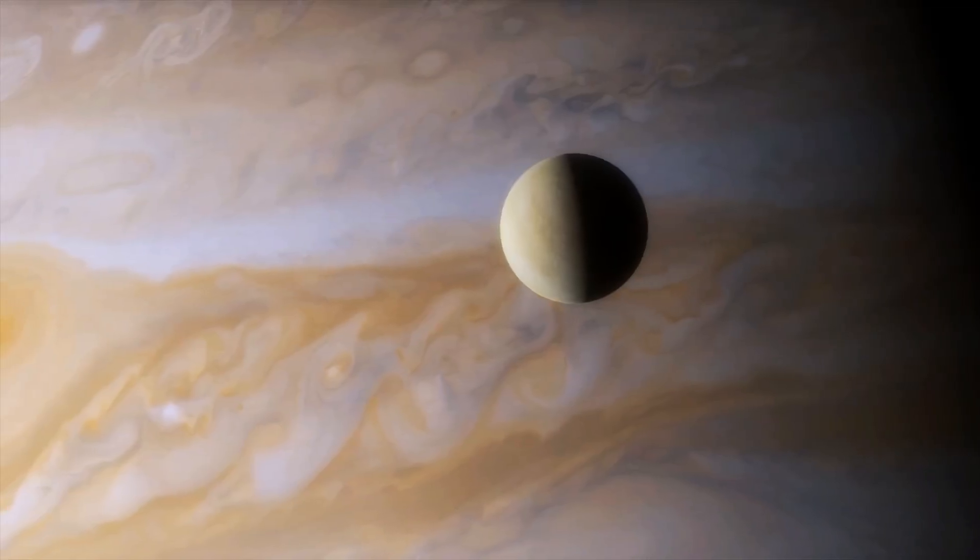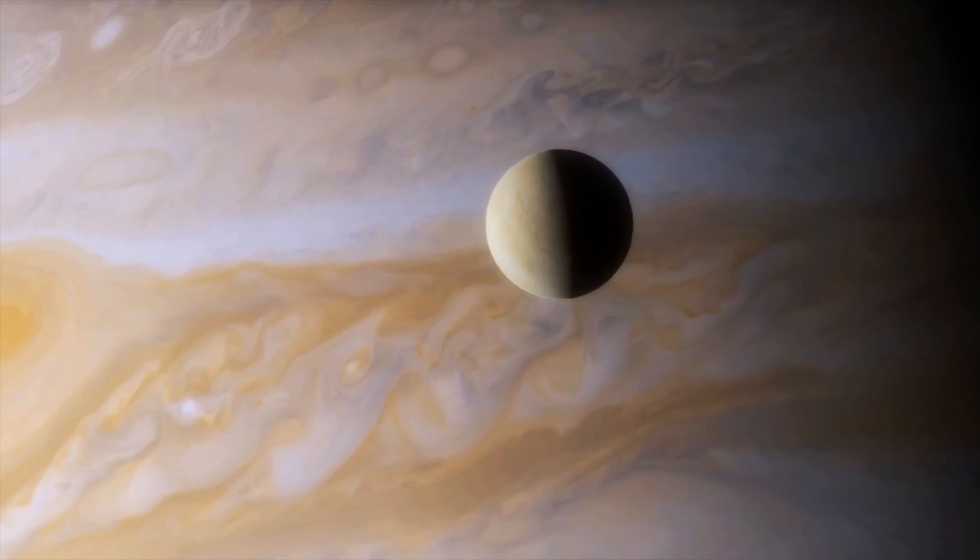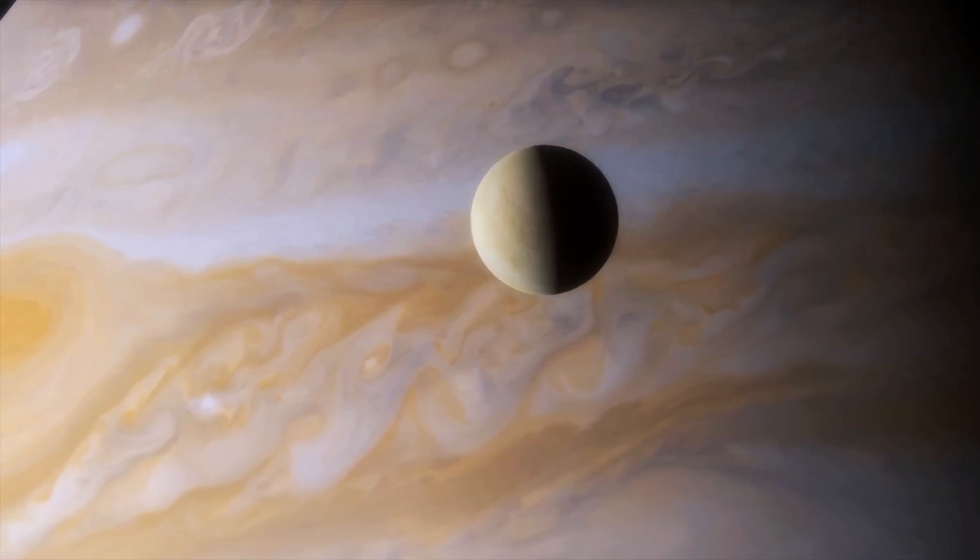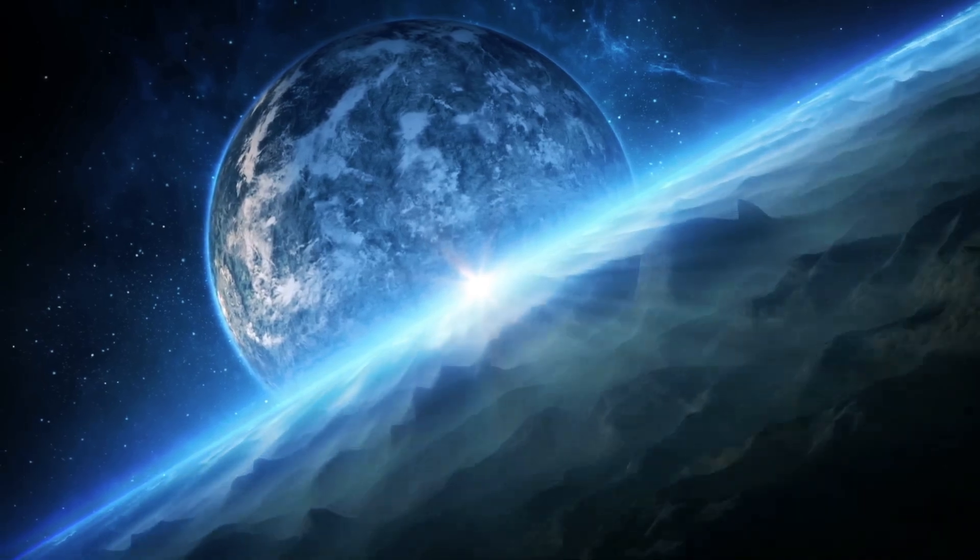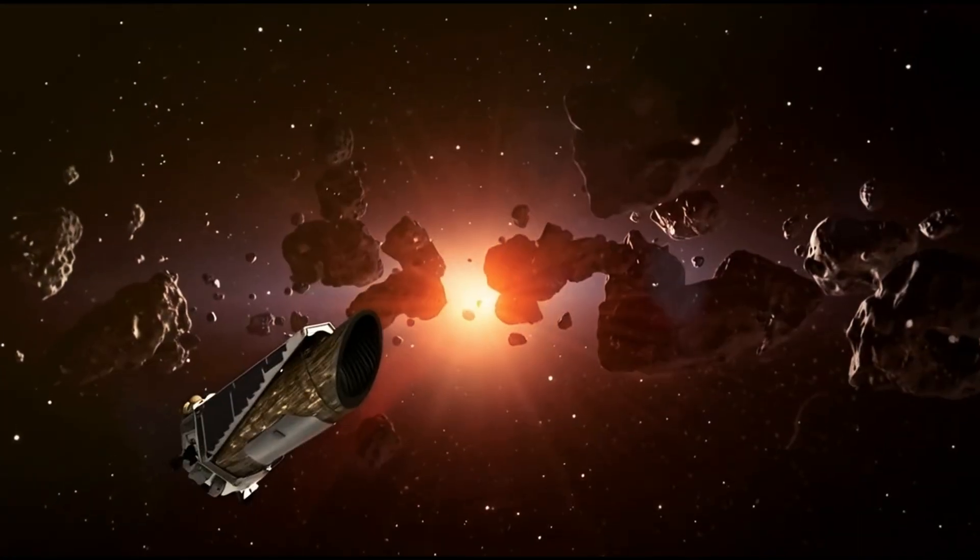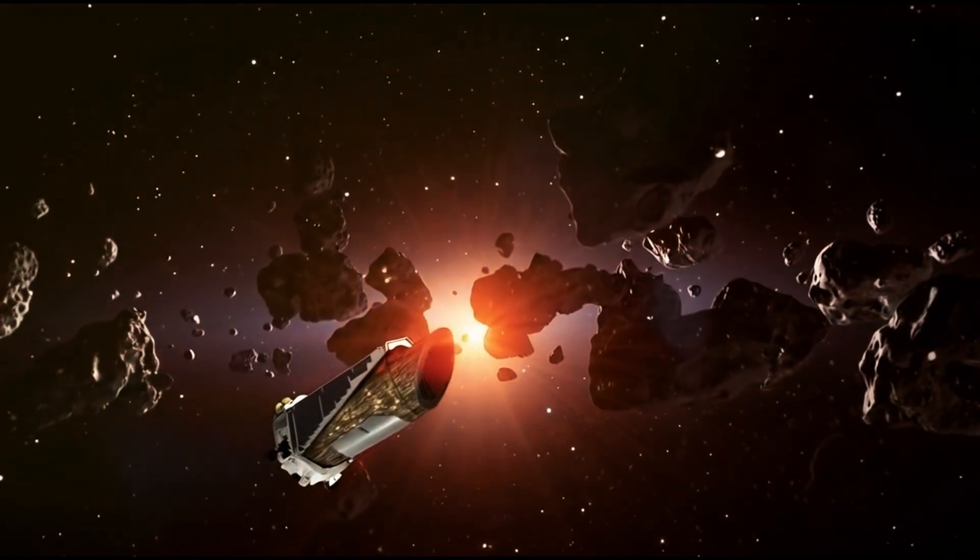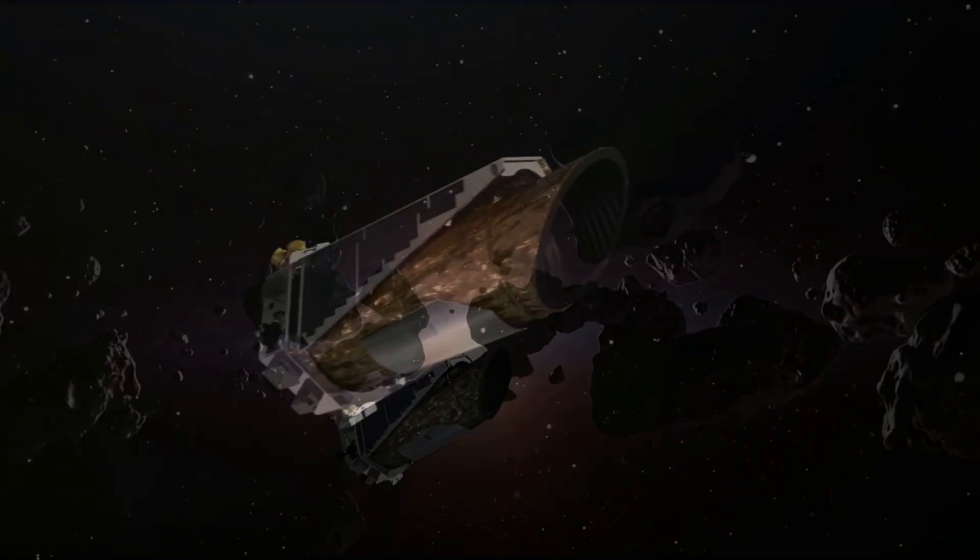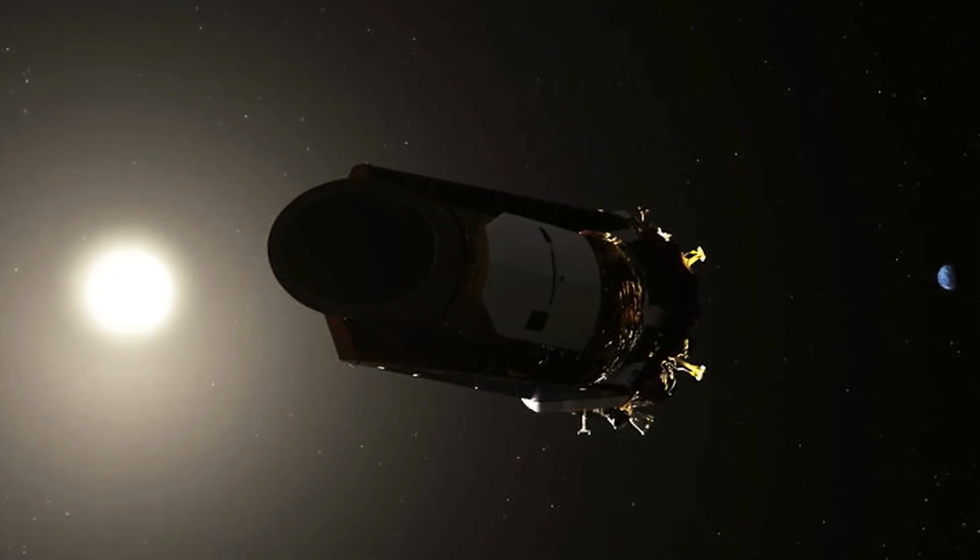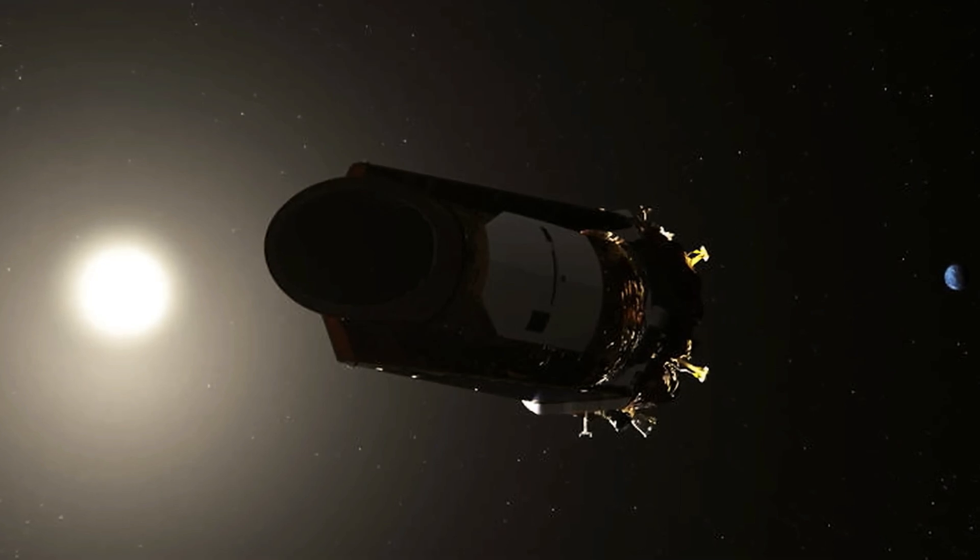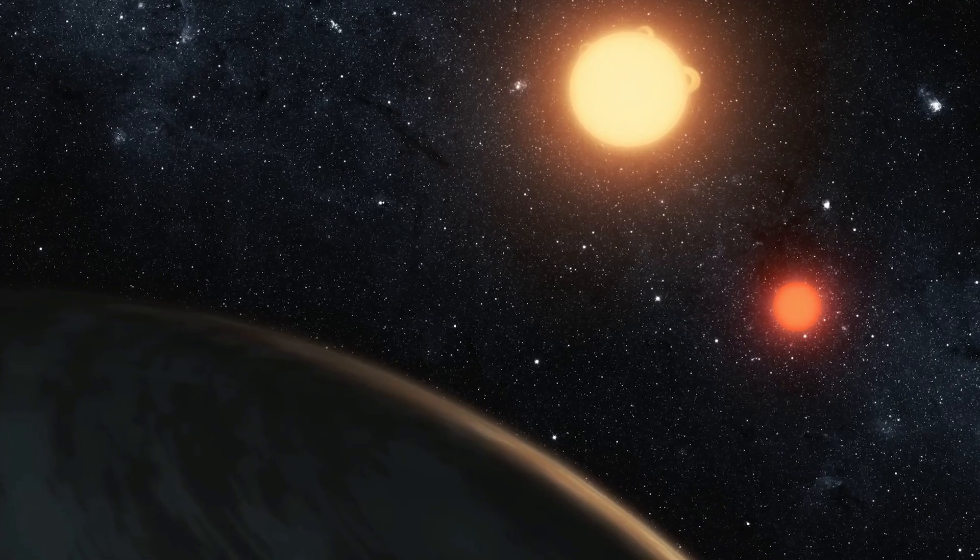Lava planets are super-dense, larger than Earth worlds in close, hot orbits around their parent stars. Some of them, known as Chthonian planets, are likely the remnant cores of evaporated hot Jupiters. And finally, Trojan planets, planets of various size found in strange locations, and sometimes even as companions to larger planets, though none have been certainly identified yet.